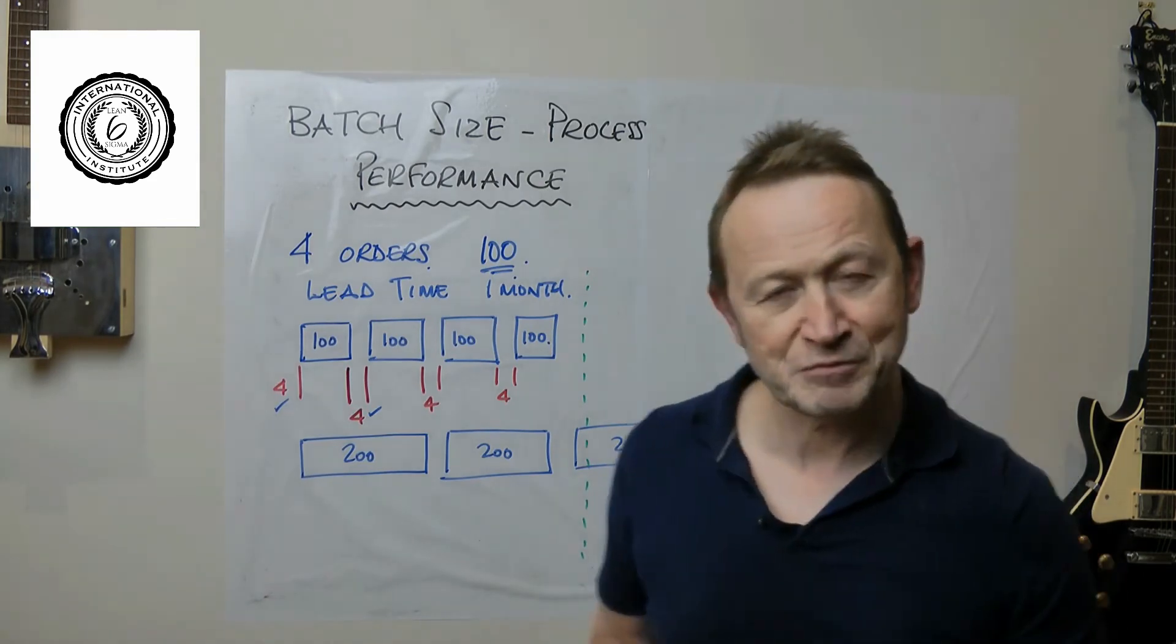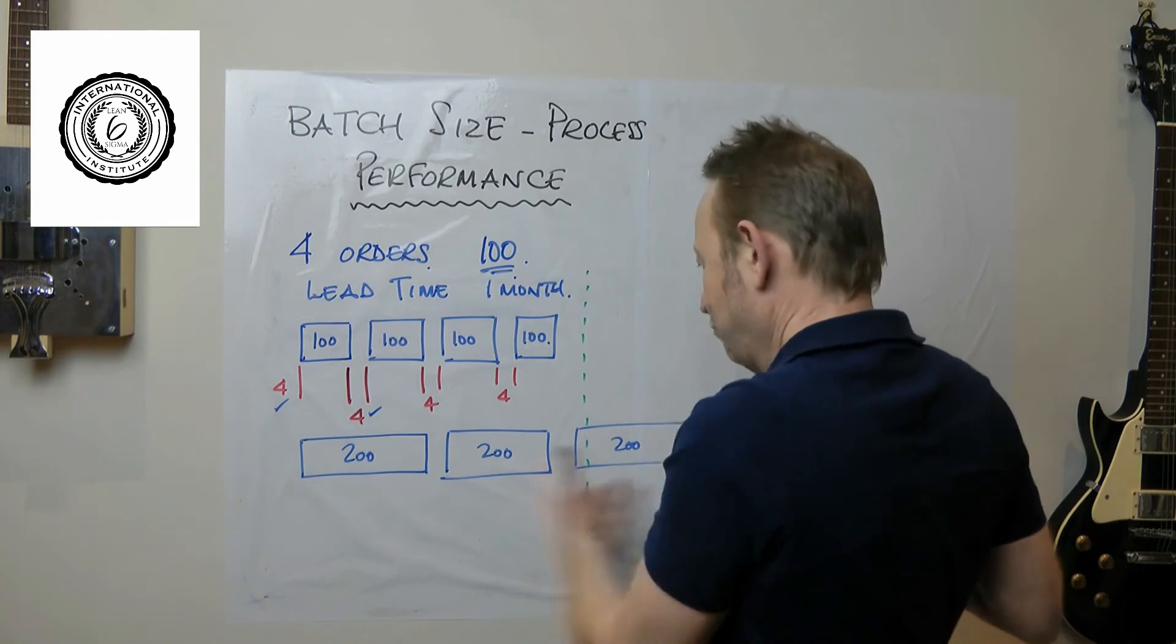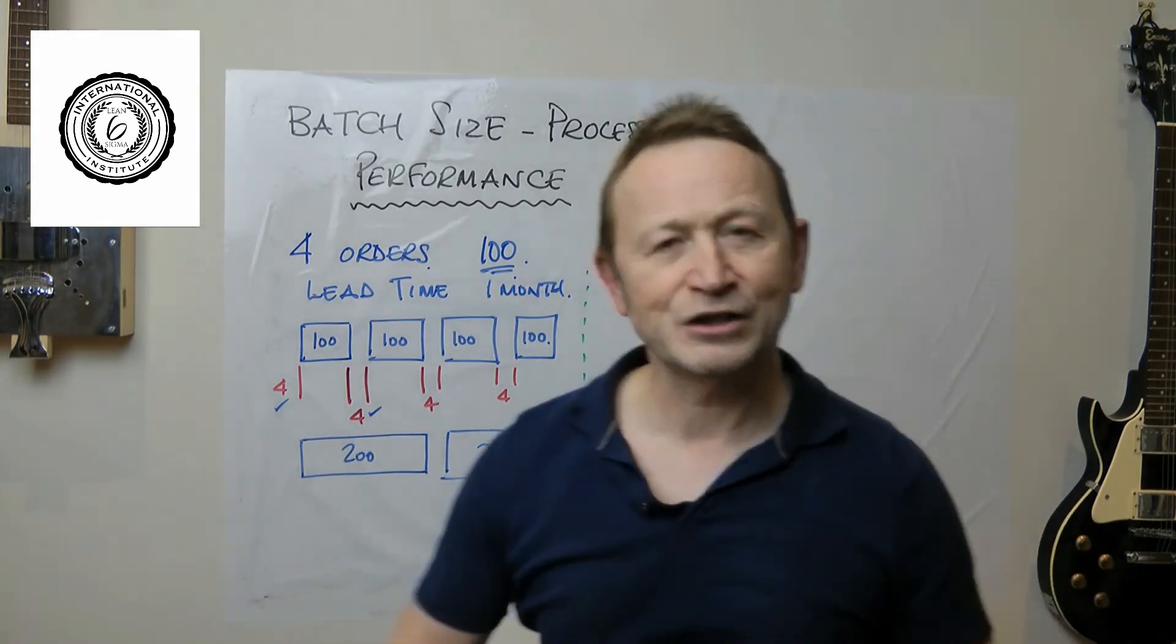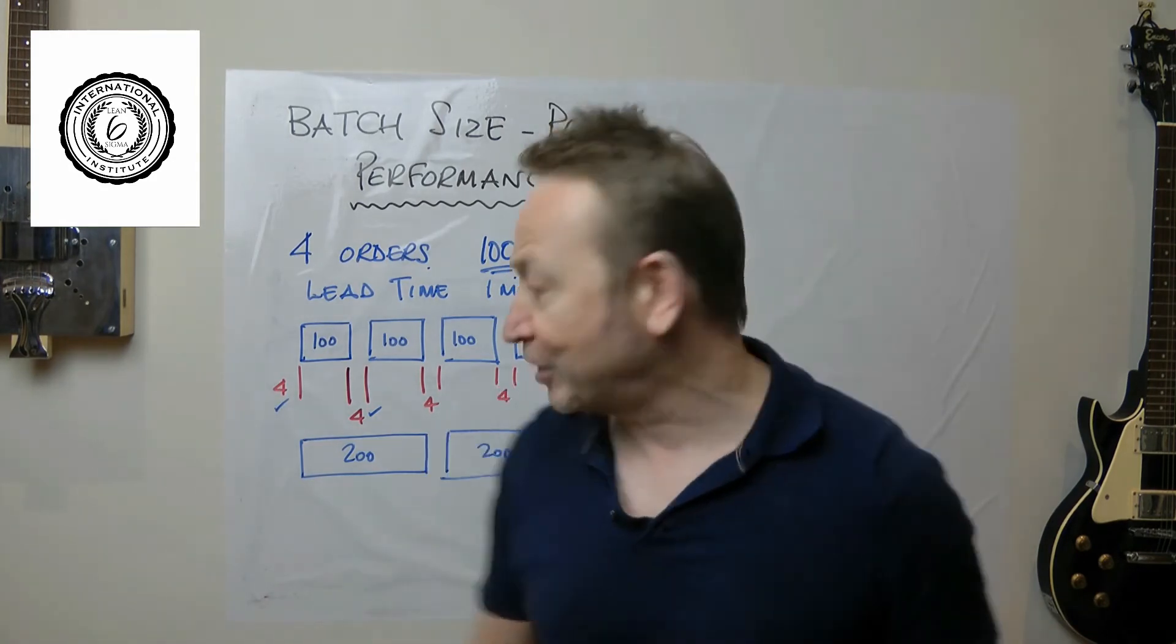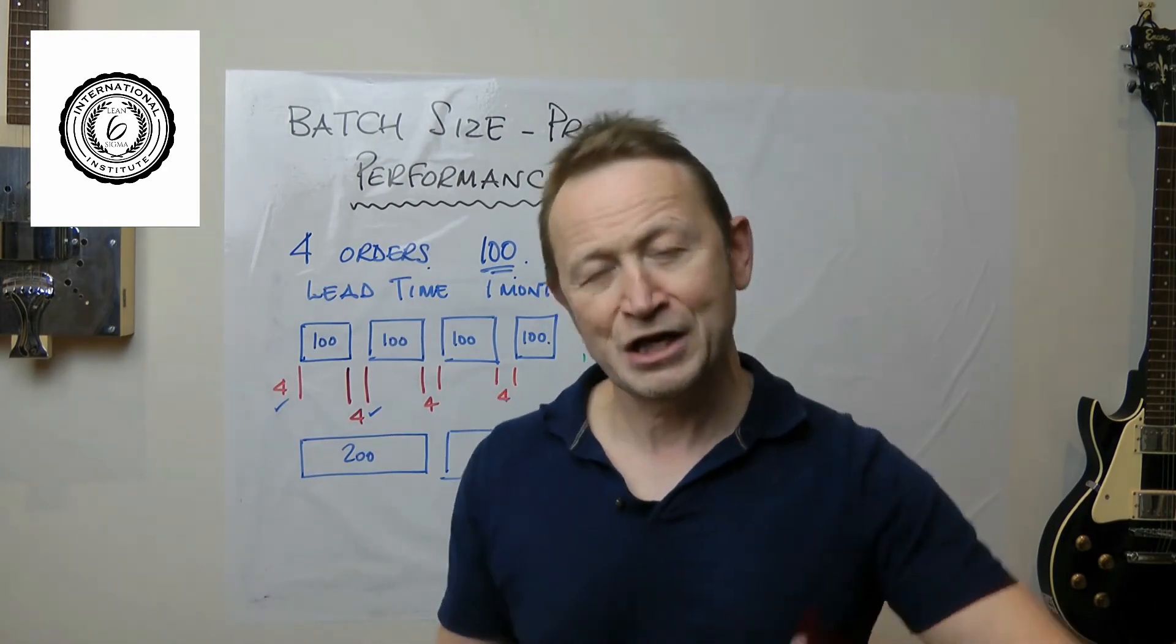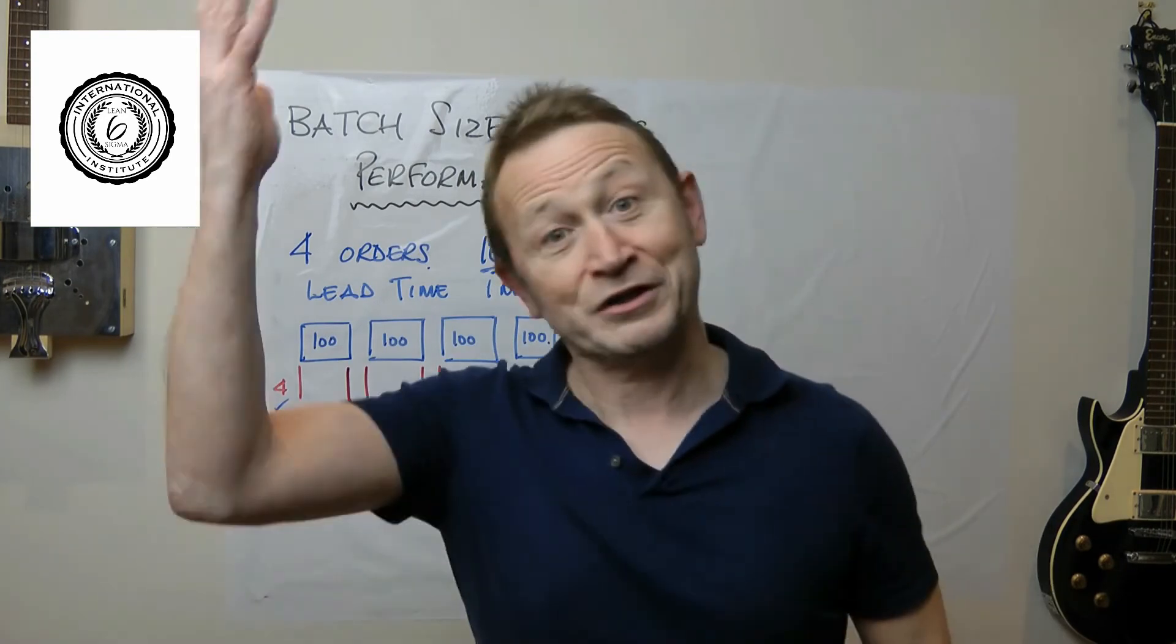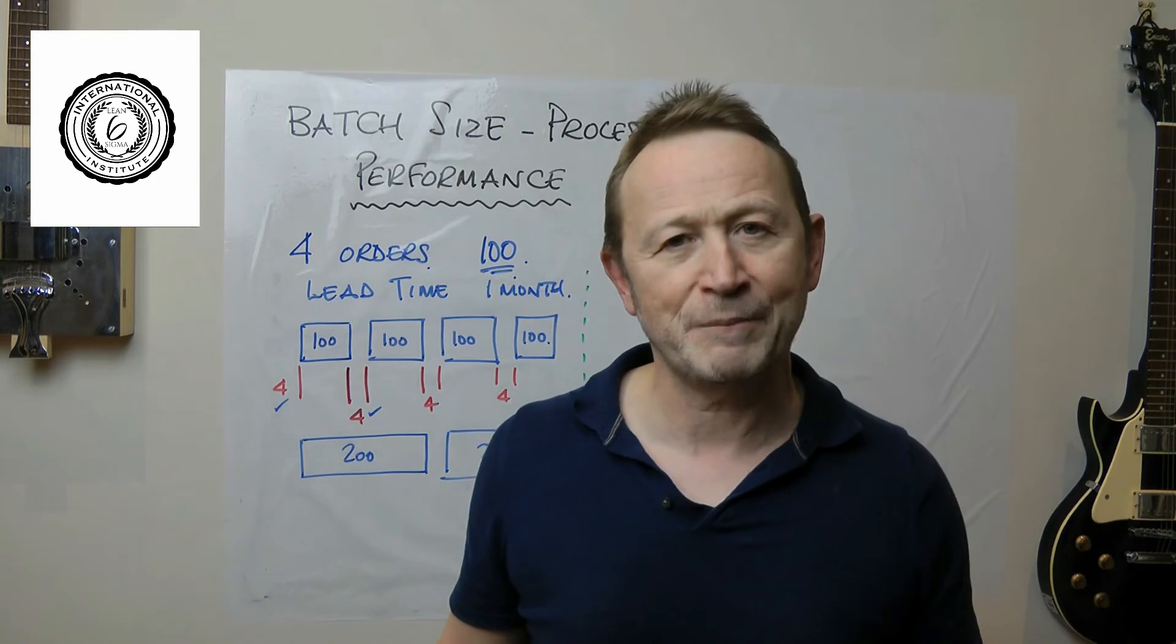But look what we've just done. We've just upset two customers. We cannot now meet the lead time. By doubling the batch size, you immediately run out of capacity. Your on-time-in-full starts to travel downwards even though your productivity is going upwards, and they say, oh we are out of capacity.